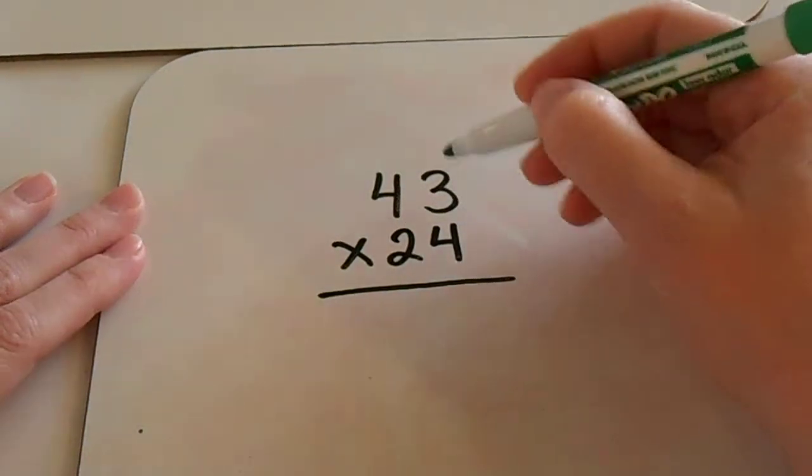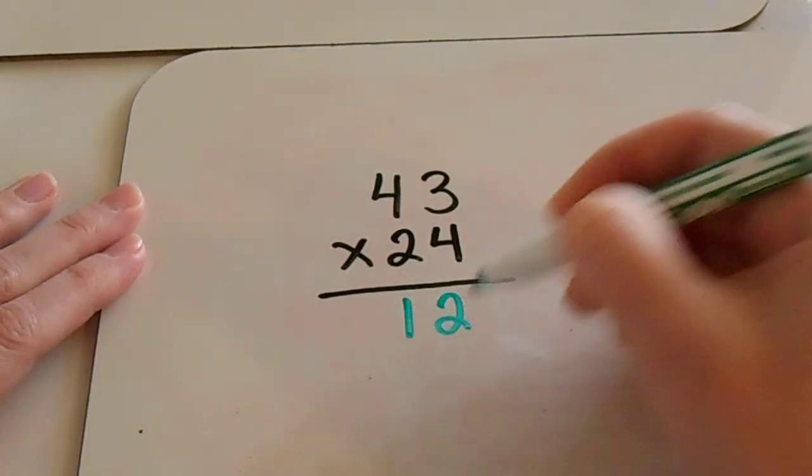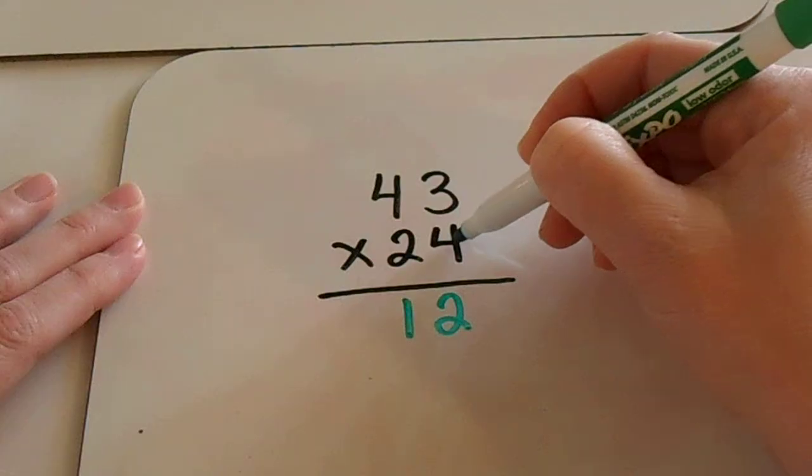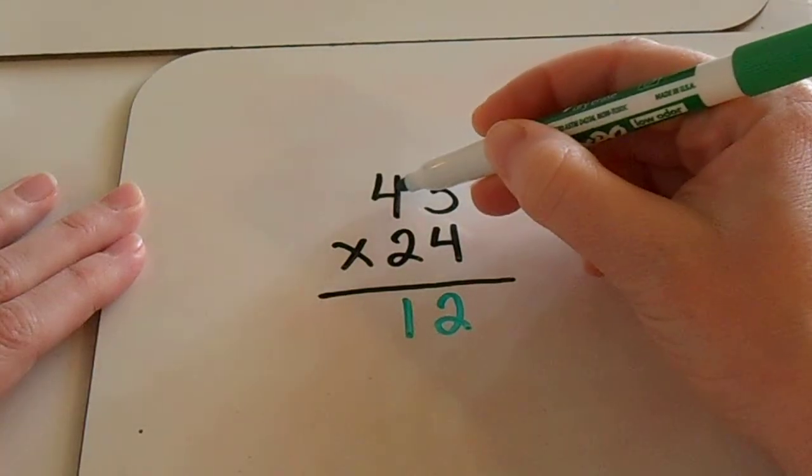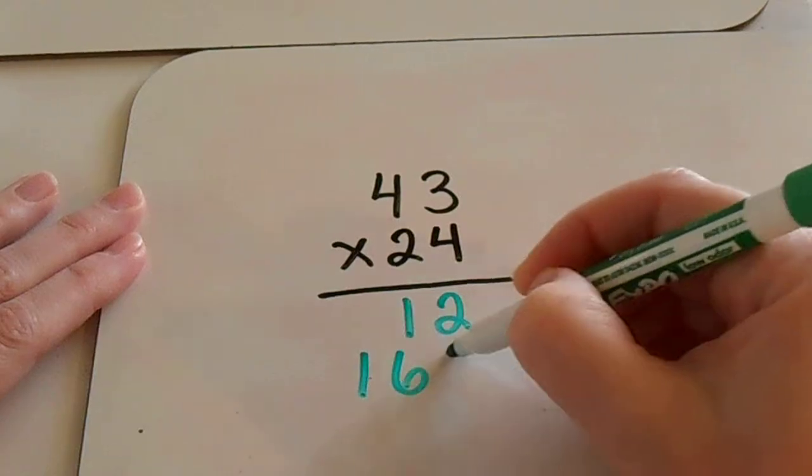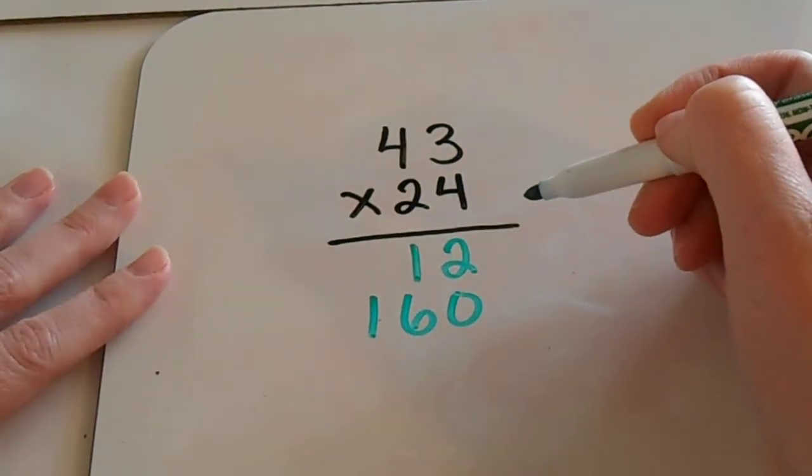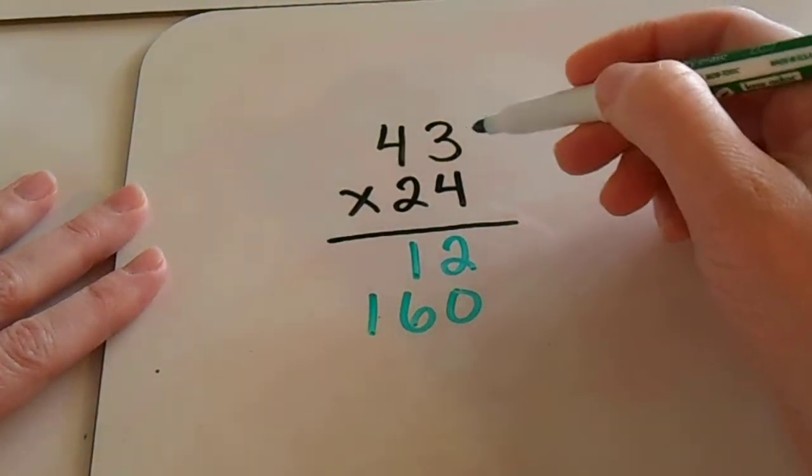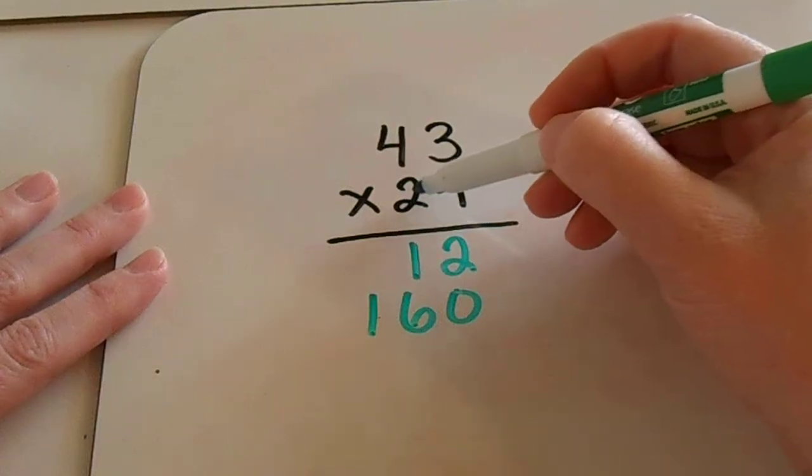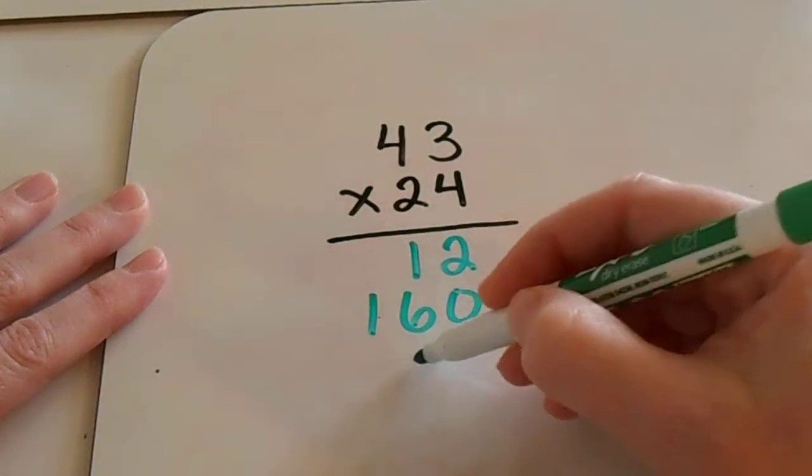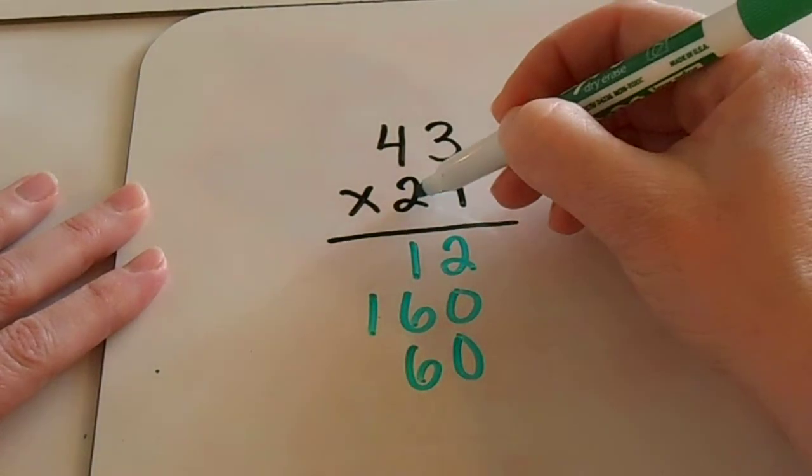I'm going to show you with this example. 4 times 3 is 12. And this way 4 times 40, not 4 times 4, but 4 times 40 is 160. And I'm just going to write them all, list them all down here underneath my original problem. This is 20 times 3. And then 20 times 40.